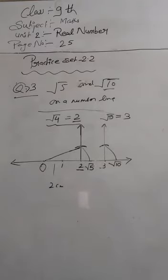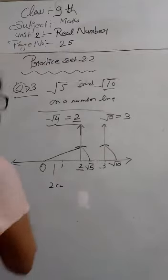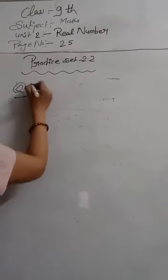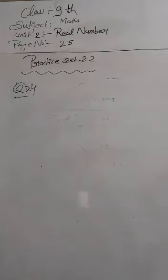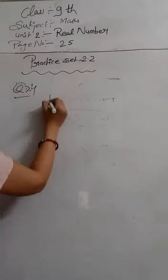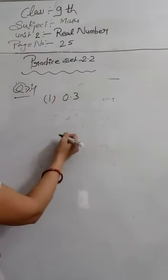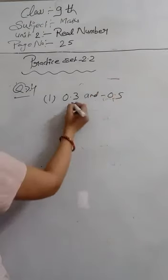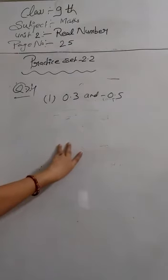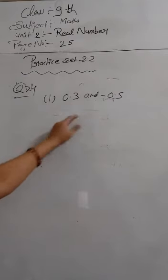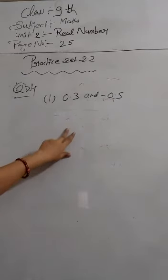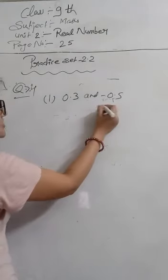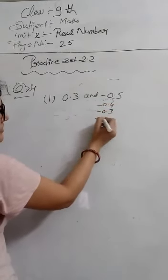Now we will go to question number 4. Question number 4 is: write any 3 rational numbers between the 2 given numbers, which are 0.3 and -0.5. So we have to write 3 rational numbers between these numbers.